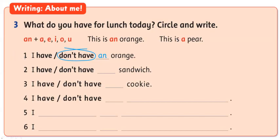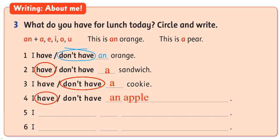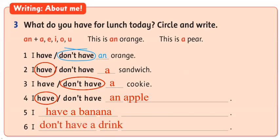Number 1: I don't have an orange. Okay, do your exercise, student. Good job. Have you finished? Let's check the answer. Number 2: I have a sandwich, right? Number 3: I don't have a cookie. Number 4: I have an apple. Number 5: I have a banana. Very good. Number 6: I don't have a drink. Good job. Now let's check the answer in your book, please.